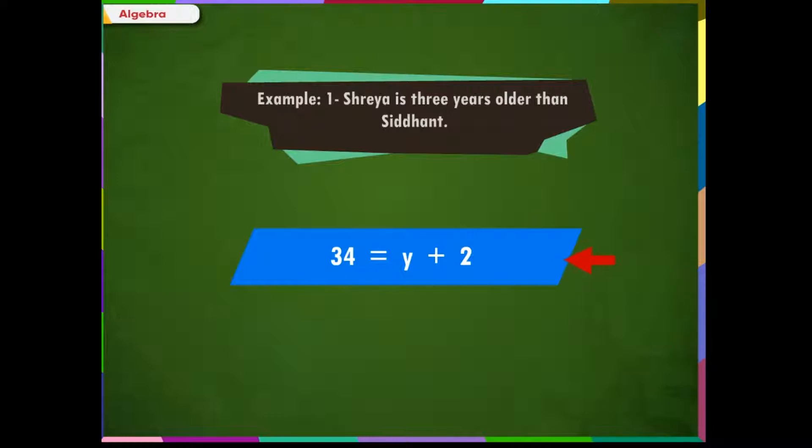34 equals y plus 2. Yes, this is an algebraic equation as it contains a variable, a constant, and the equal sign.